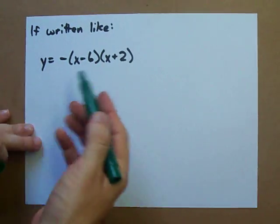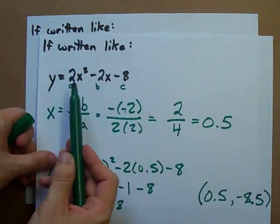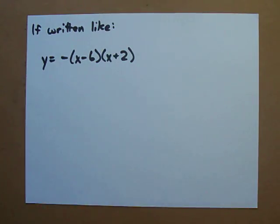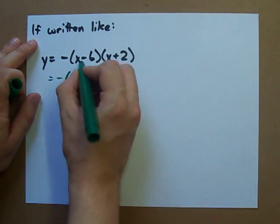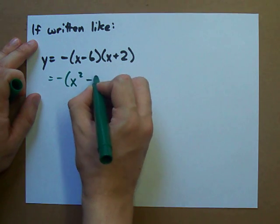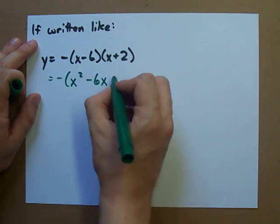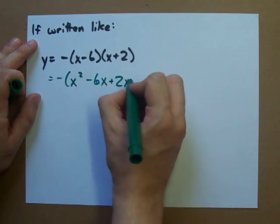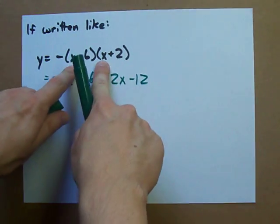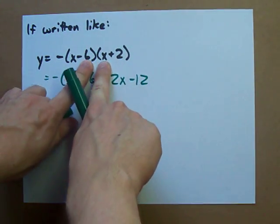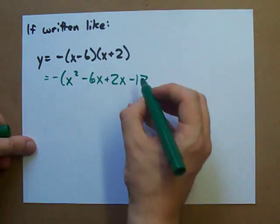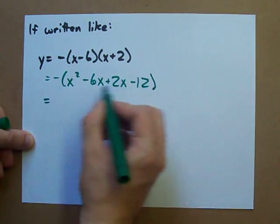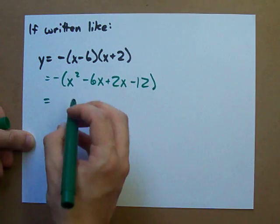This is similar. Except, instead of being given in standard form, it's given in factored form. Well, guess what? If you just multiply everything together, negative foil. x squared minus 6x plus 2x minus 12. x squared minus 6x plus 2x minus 12. And then, simplify all this. Don't forget, even negative out front.